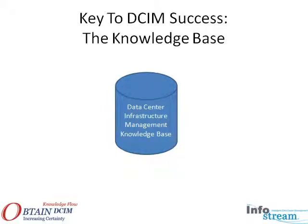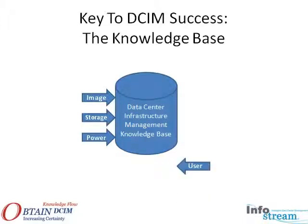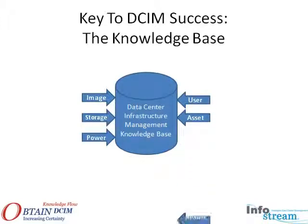Data Center Infrastructure Management is about what you have, where it is, and more importantly, the relationship each resource has with other resources that make up your infrastructure. With this knowledge base, the Obtain toolset maximizes the efficiency of how key functions such as resource management, capacity planning, power and cooling management, and change management are conducted.